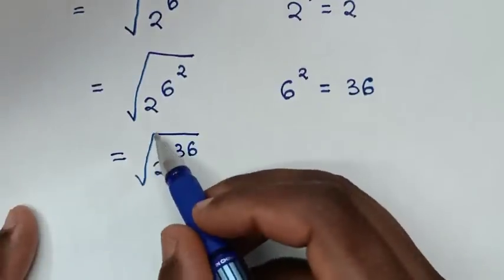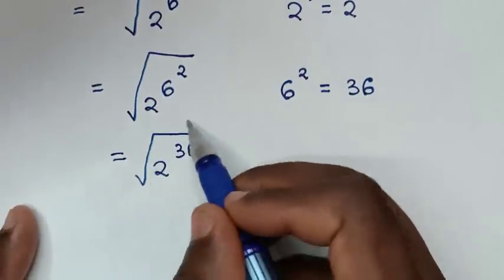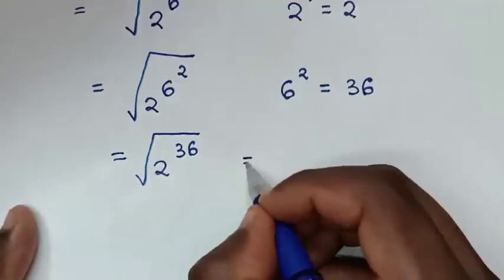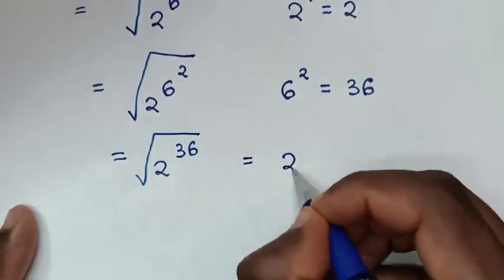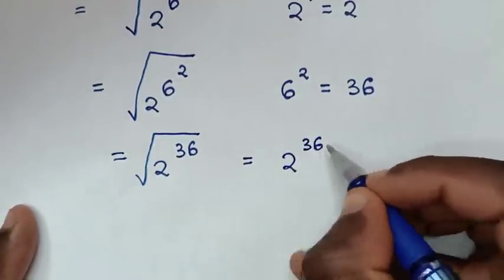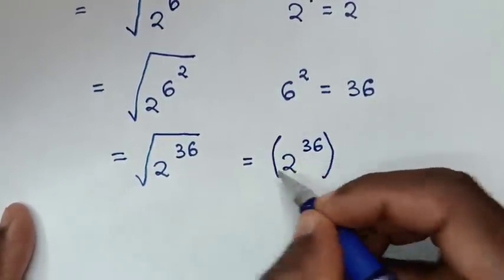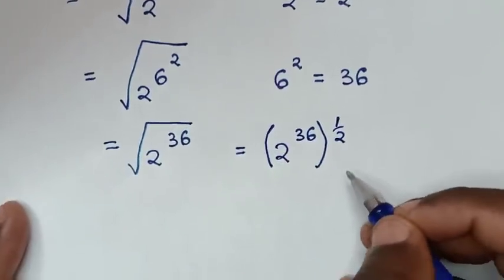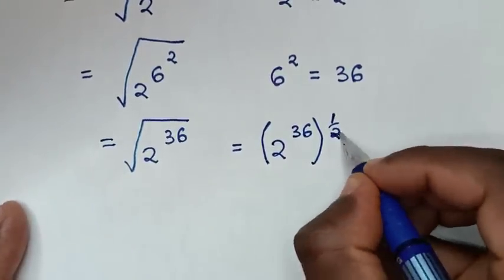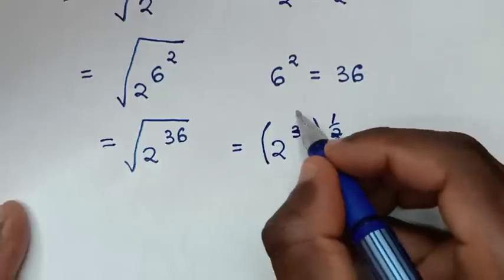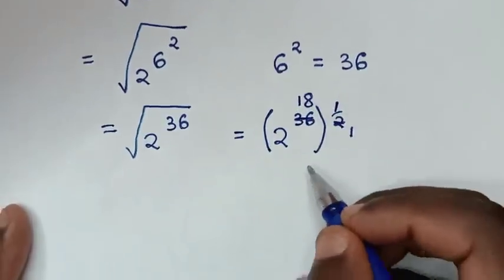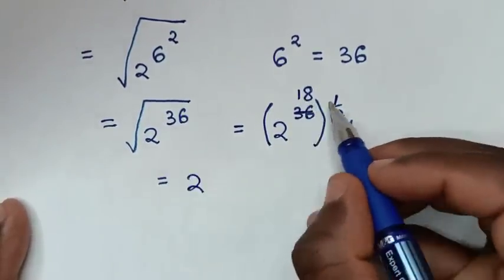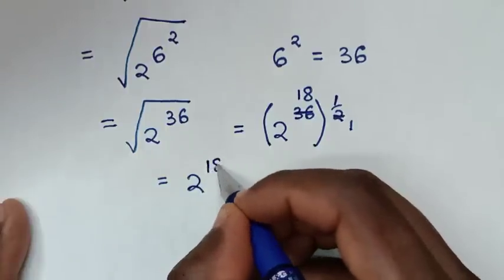In the next step, the square root is the same as power of a half. So it will be equal to 2 power of 36 raised to the power of a half. To simplify: 36 times one-half gives 18, so it will be equal to 2 power of 18.